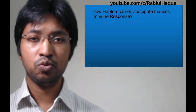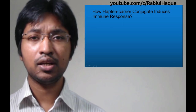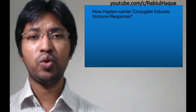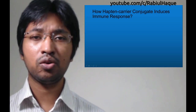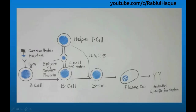The last topic we will talk about today is how hapten-carrier conjugate can induce an immune response. I have drawn a simple diagram to explain that. This image shows how hapten-carrier conjugate can induce an immune response. On the left side of the diagram, we can see a hapten bound to a carrier protein. The hapten-carrier protein complex will then interact with immunoglobulin M receptor located on the surface of B-lymphocyte.